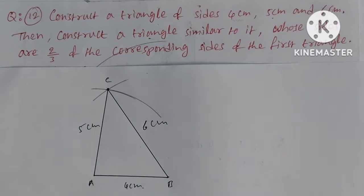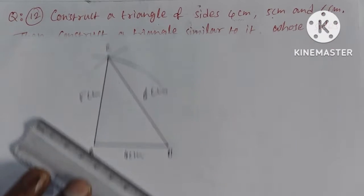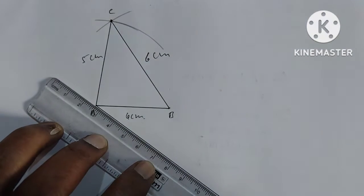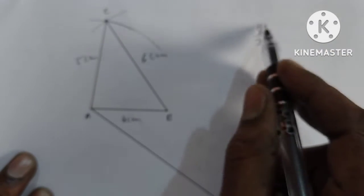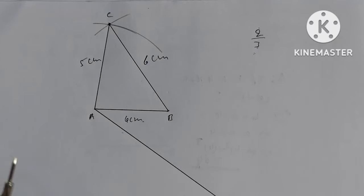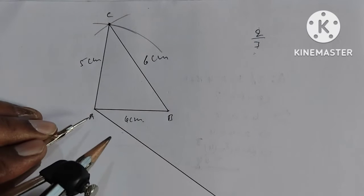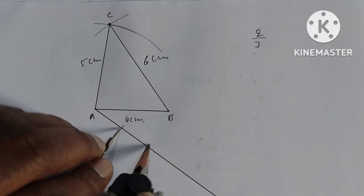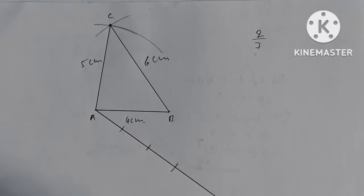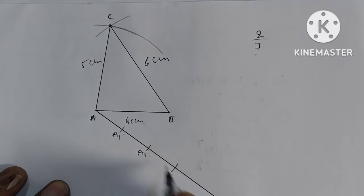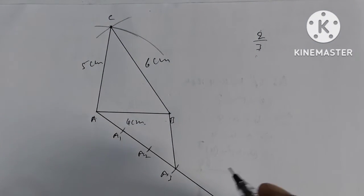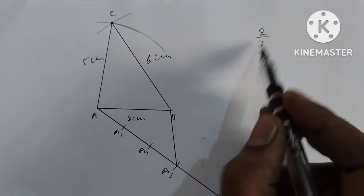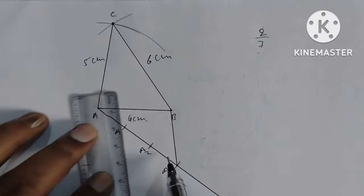Now we divide it in the 2/3 ratio. The highest number is 3, so we divide side AB into 3 equal parts, marking points 1, 2, and 3. We draw a ray from A and mark off 3 equal parts along it. This is A1, A2, and A3.